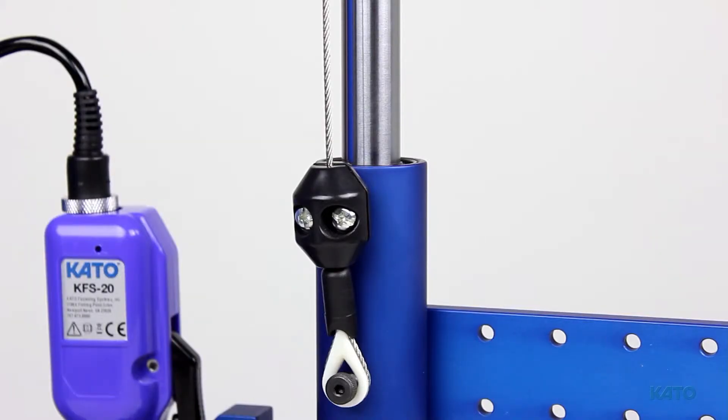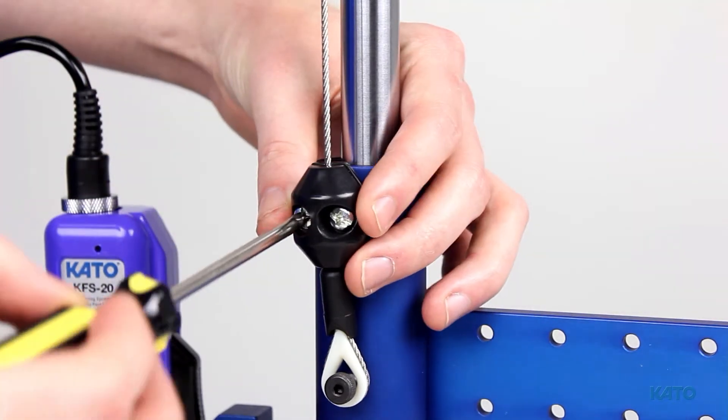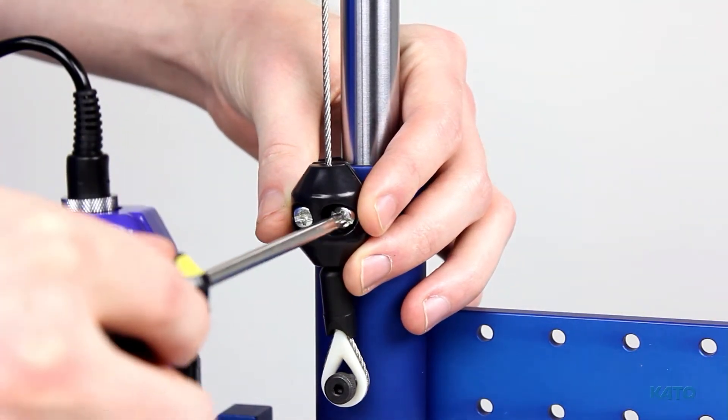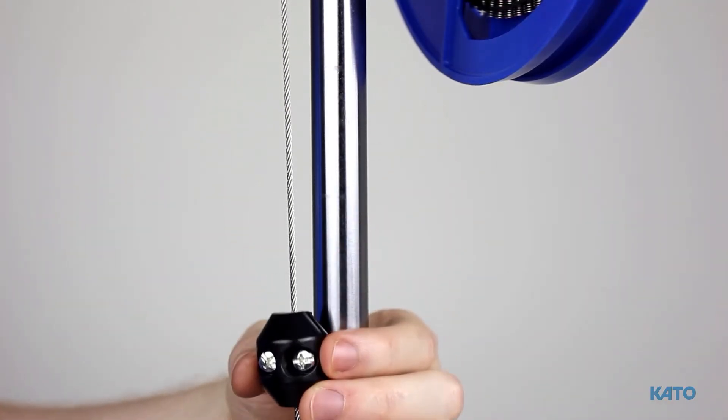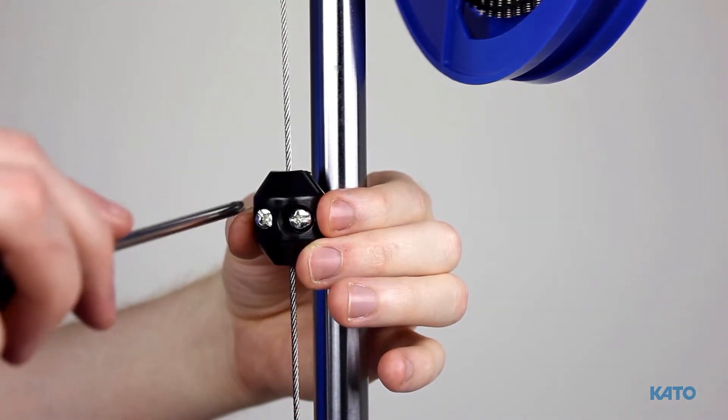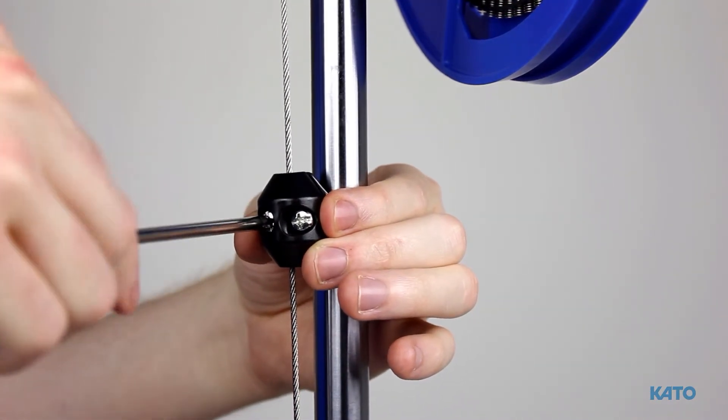To fine-tune the height of the articulating arm, you can start by loosening the screws of the height limit collar with the Phillips screwdriver. Then you can adjust the collar along the cable. This is done to the operator's preference. After you find that position, re-tighten the screws.